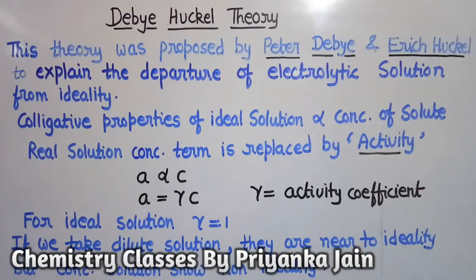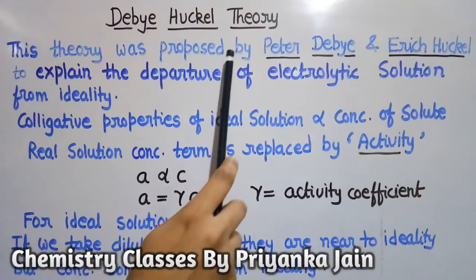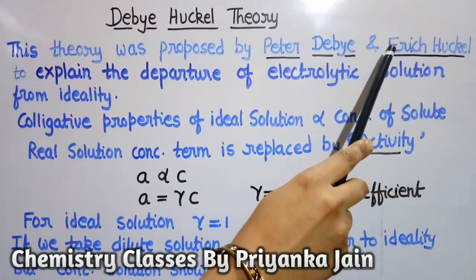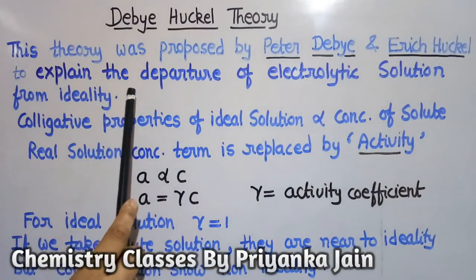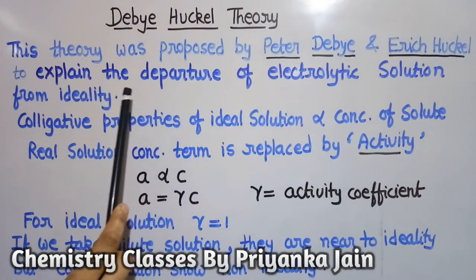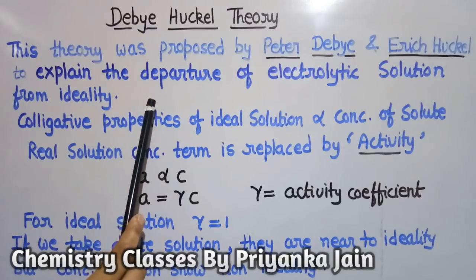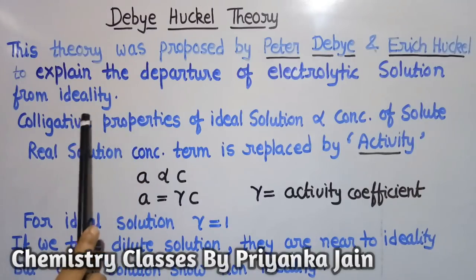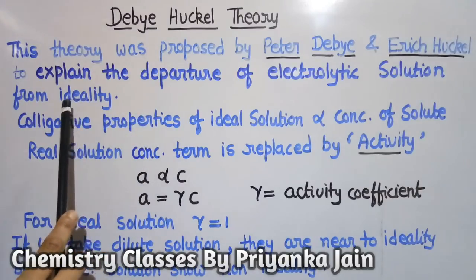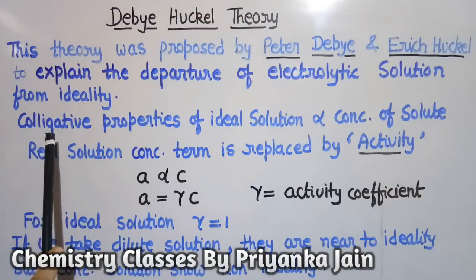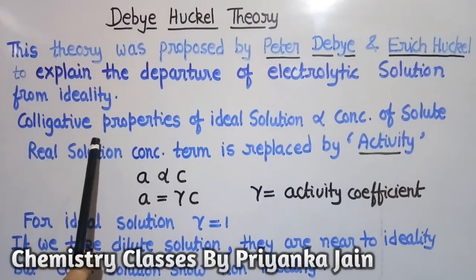Hello students, today we will study about the Debye and Hückel's theory, which is related to electrochemistry. This theory was proposed by Peter Debye and Eric Hückel to explain the departure of electrolytic solutions from ideality, because electrolytic solutions show deviation from ideal behavior.